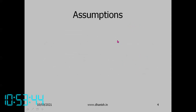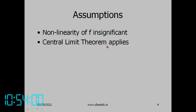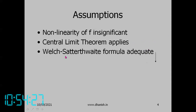The assumptions made during this analysis are: we assume the non-linearity of f — the function connecting input variables to the measurement — is insignificant; the central limit theorem applies, meaning no single source dominates the distribution; if there are many small sources the central limit theorem is valid, but if one large non-normal source exists the output will also not be normal. The Welch-Satterthwaite formula was assumed adequate.